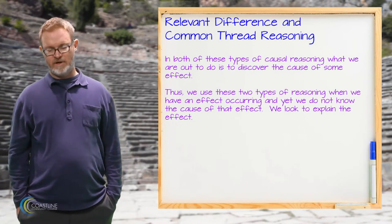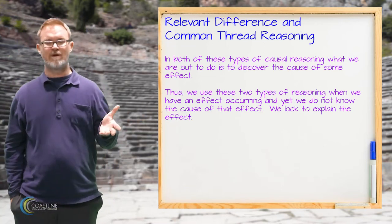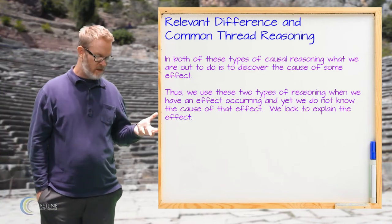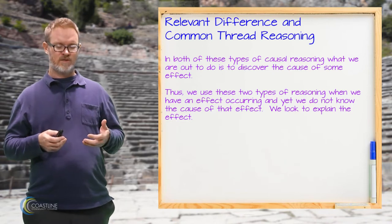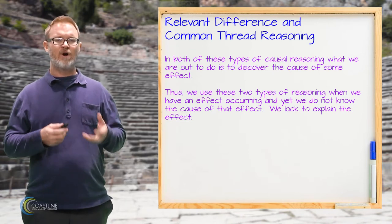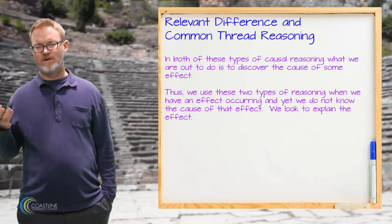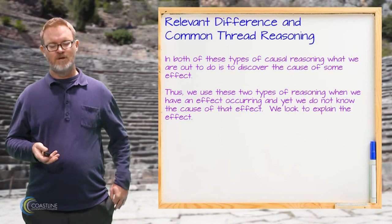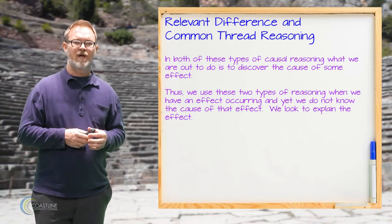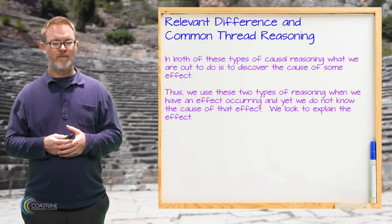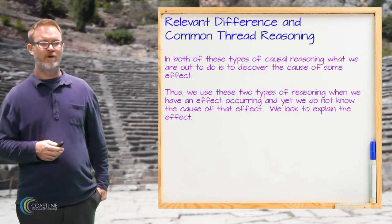In the next set of slides, we'll be discussing the difference between relevant difference reasoning and common thread reasoning. The distinction is really about how we determine the cause of some unexplained effect. Imagine, for example, that you wake up in the morning with a headache and you want to understand what might have caused that headache so that you don't do it again. This is called causal reasoning — we attempt to determine the cause of some effect that we're unsure of.